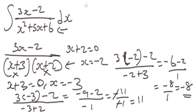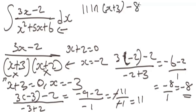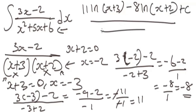To write the final answer: where we didn't substitute -3, we have (x + 3), and where we didn't substitute -2, we have (x + 2). So the answer is: 11 ln|x + 3| - 8 ln|x + 2| + C. This is basically how you use shortcut tricks to solve integration by partial fractions in seconds.